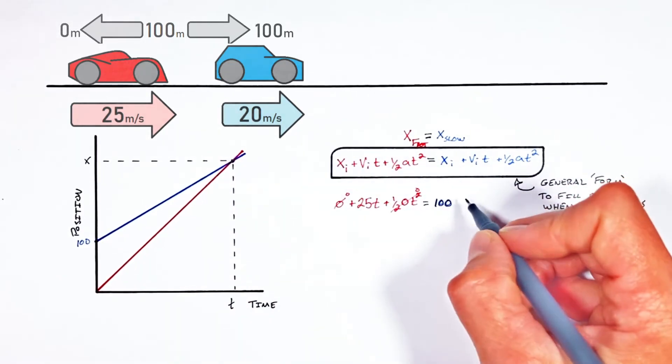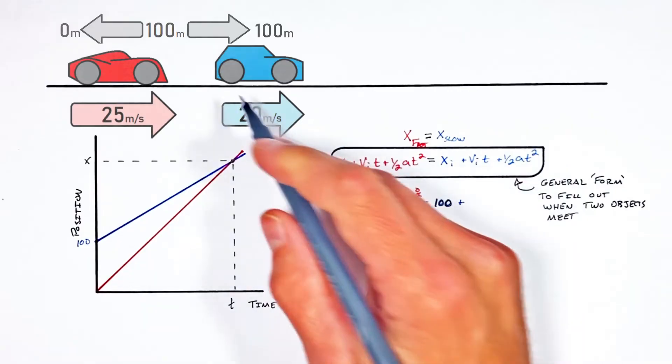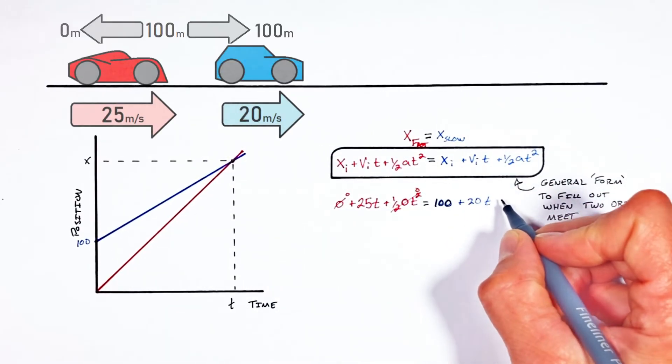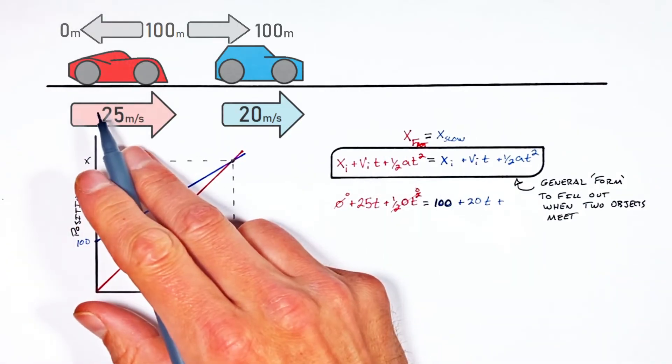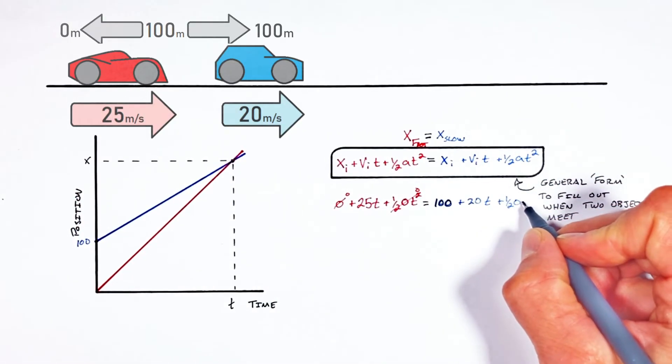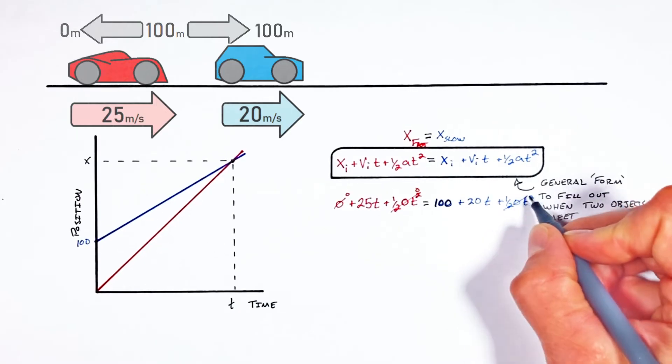But moving on to the velocity of our slow car. That slow car is moving at 20 meters per second for some unknown time t. And again, just like the fast car, the acceleration of the slow car is zero. So that term is zero.